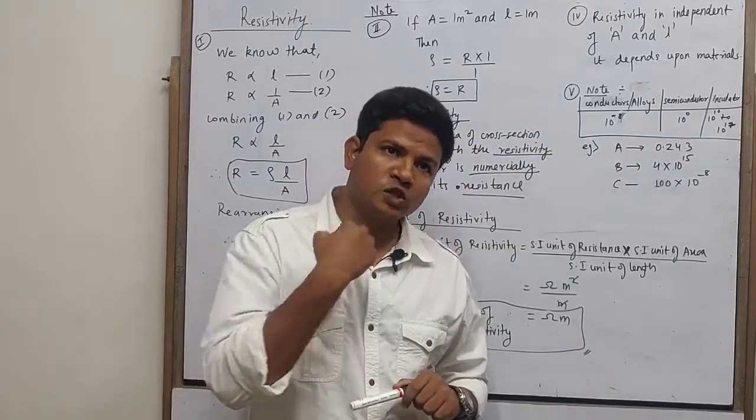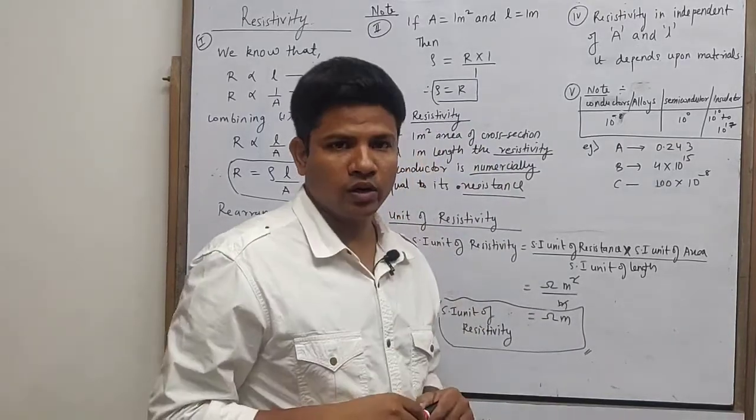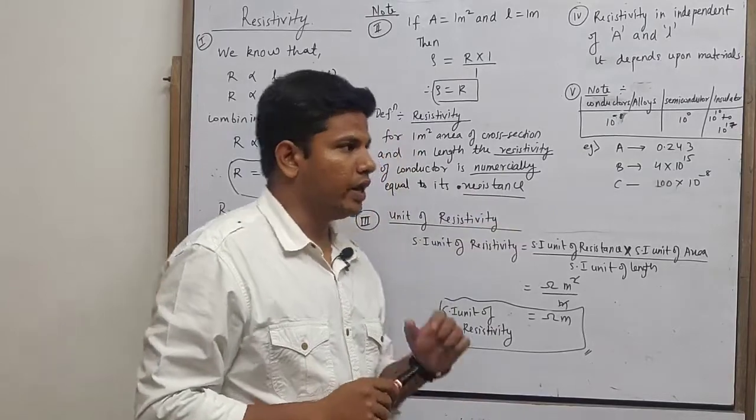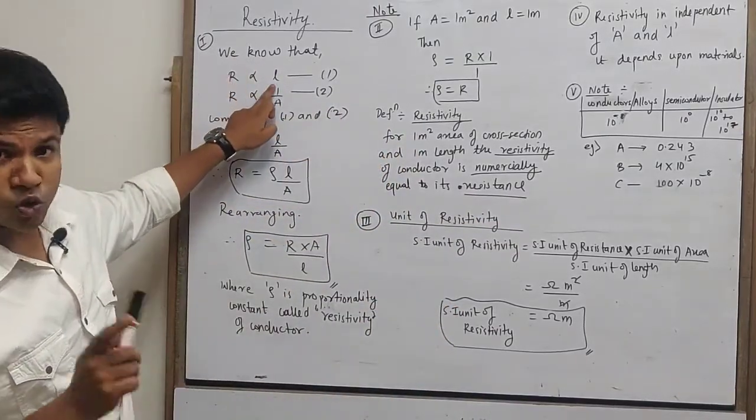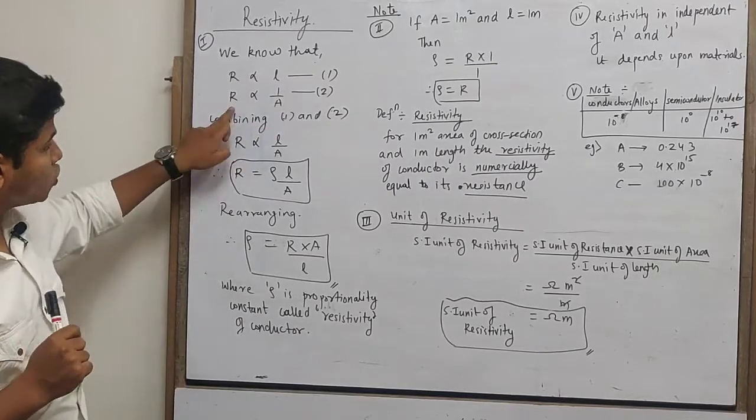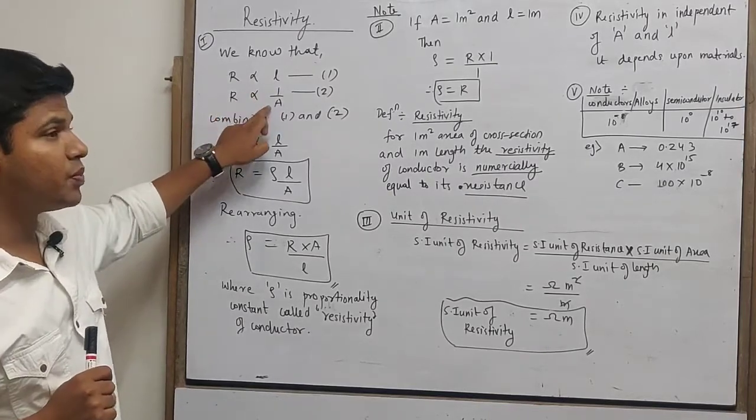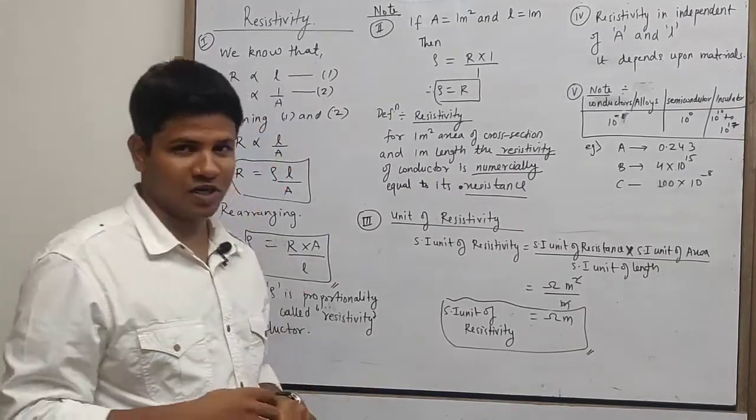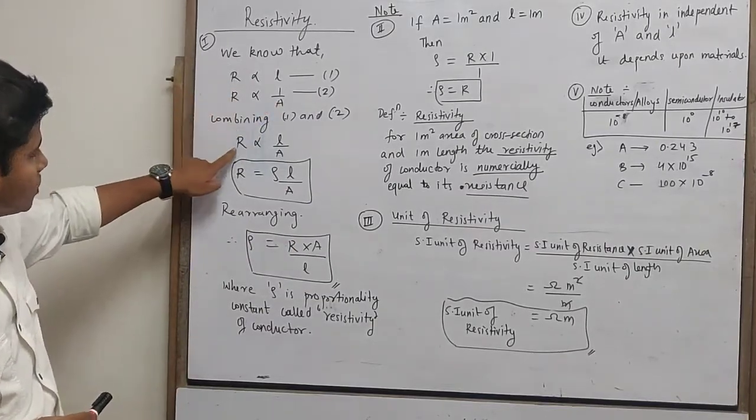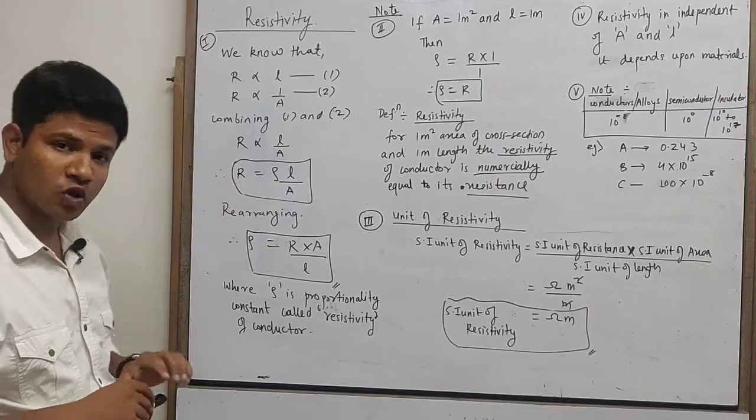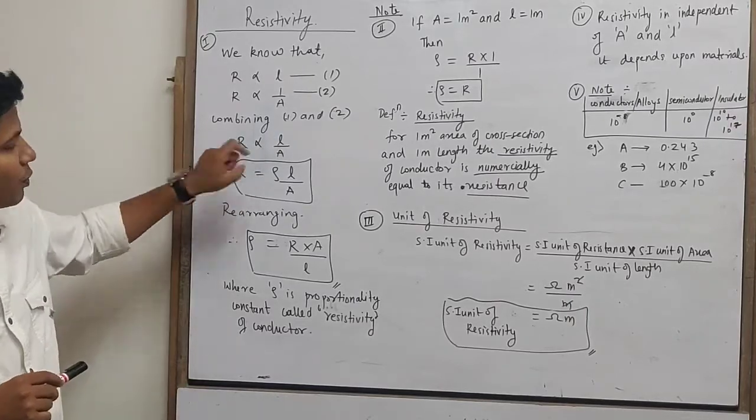Now from the experiment let us take two of these dependents. We can say resistance is directly proportional to length and we also know that resistance is inversely proportional to area of cross section. So combining both, I can say resistance is proportional to length upon area of cross section.